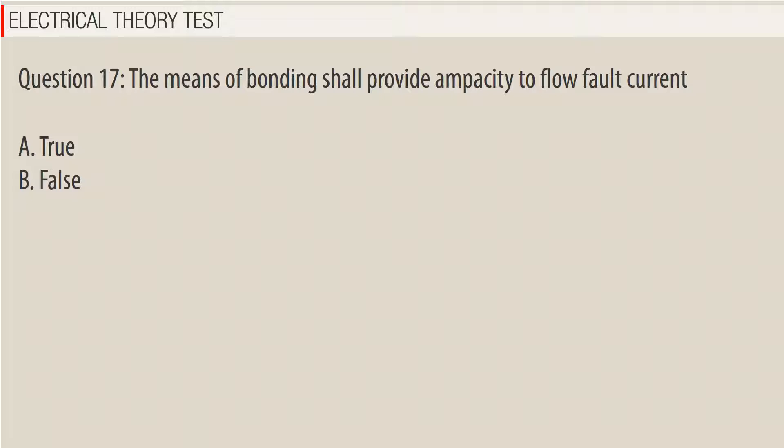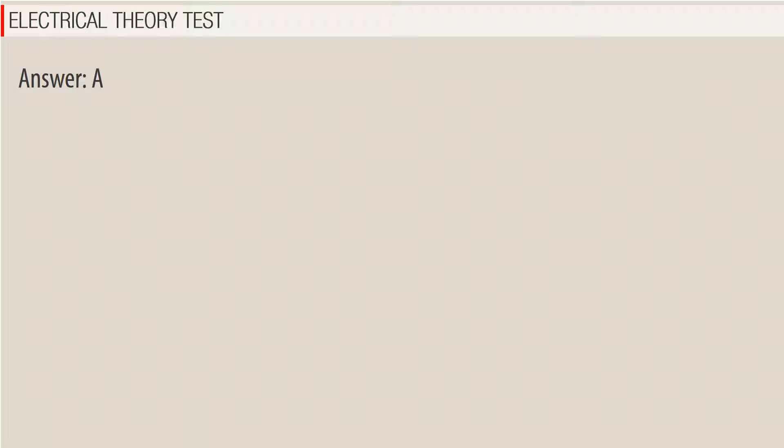Question 17: The means of bonding shall provide ampacity to flow fault current. A. True, B. False. Answer: A.